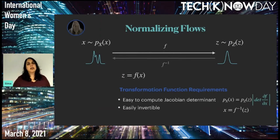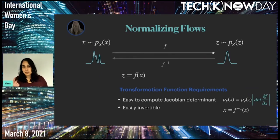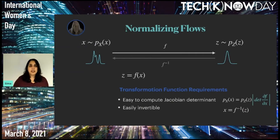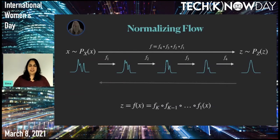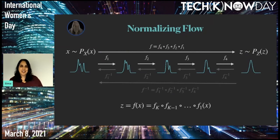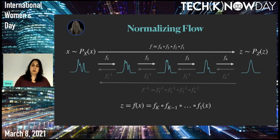This is where we use the last piece of normalizing flows: a flow is not a single function but a composition of functions that gradually transforms the complex distribution into a simple one, one function at a time. The inverse function is a composition of each of the individual inverse functions. This means we can use simpler intermediate functions that each hold the two conditions, and the whole flow holds them as well. The composition of different functions generates the complex overall mapping that we need.